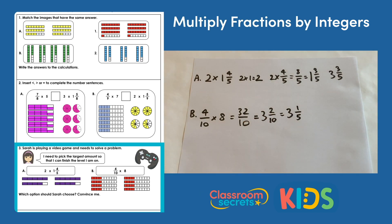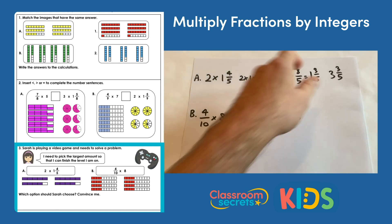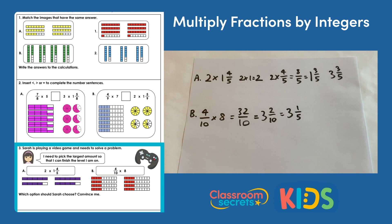Looking at the results, three and three fifths is more than three and one fifth, so Sarah should pick option a. That was the answer video for the multiplying fractions by integers worksheet from Classroom Secrets. For a video tutorial on this skill, visit kids.classroomsecrets.co.uk, and for more resources visit classroomsecrets.co.uk.